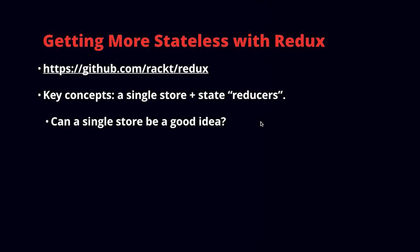Redux is available at github.com/rackt/redux. The key concepts of Redux are a single store — instead of the typical Flux approach with multiple stores, Redux has just one — and something called state reducers. This raises two questions: can a single store be a good idea, and what is a reducer? Let's deal with the second question first, because understanding the core idea of reduction makes a lot of things in Flux suddenly make much more sense.